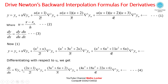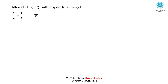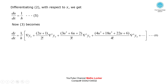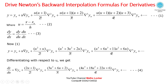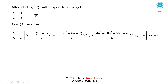Substituting dy/du from equation 4 into equation 3, and differentiating equation 2 to get du/dx: differentiating U = (x - xn)/h with respect to x gives du/dx = 1/h, say equation 5. So equation 3 becomes: dy/dx = (1/h) × [dy/du], giving us the first derivative formula, say equation 6.